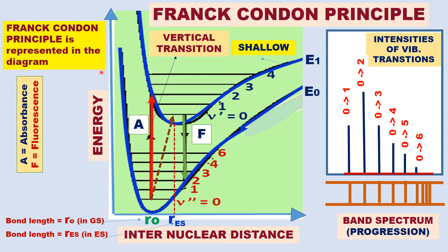This is the potential energy curve for the ground state — the Morse curve. As used in vibrational spectra, this is the Morse curve for the ground electronic state.